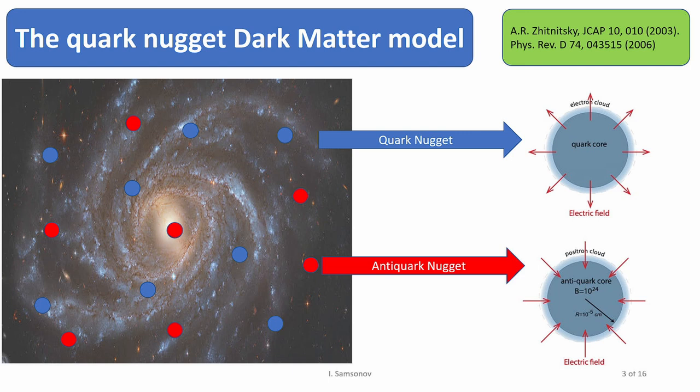The structure of these particles is the following. Quark nugget consists of a quark core and electron cloud around this quark core, which is needed for electric neutrality of this object. The anti-quark nugget respectively has anti-quark core and positron cloud around this anti-quark core. Each of these particles is a compact composite particle, not an elementary particle. It's composed of a large number of quarks. That's the main point about this model.